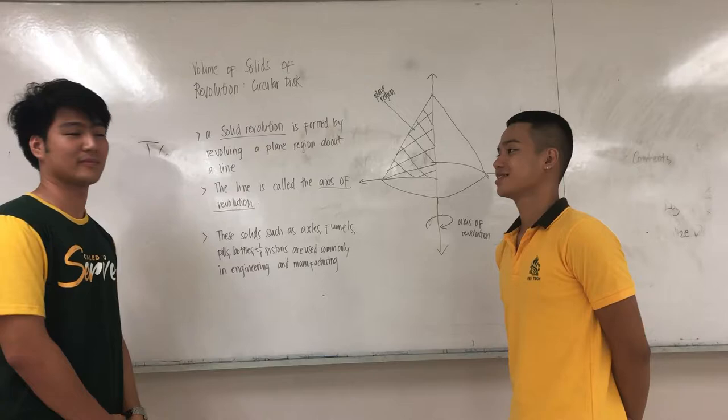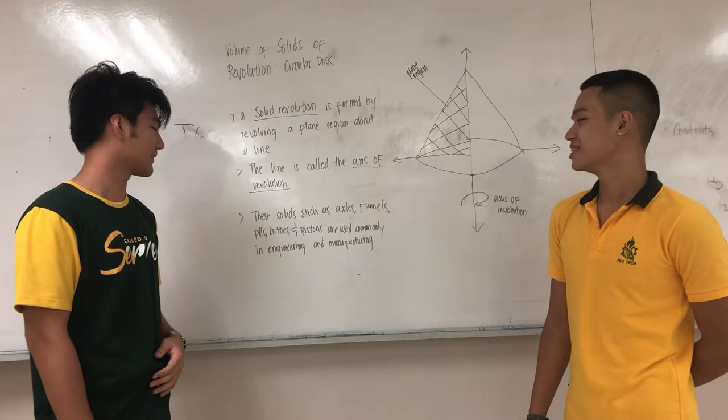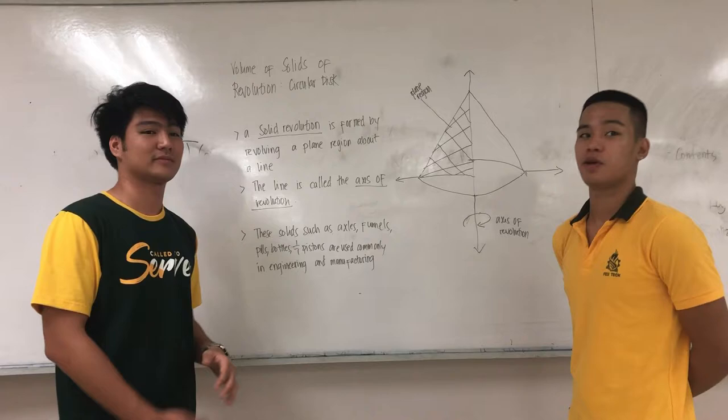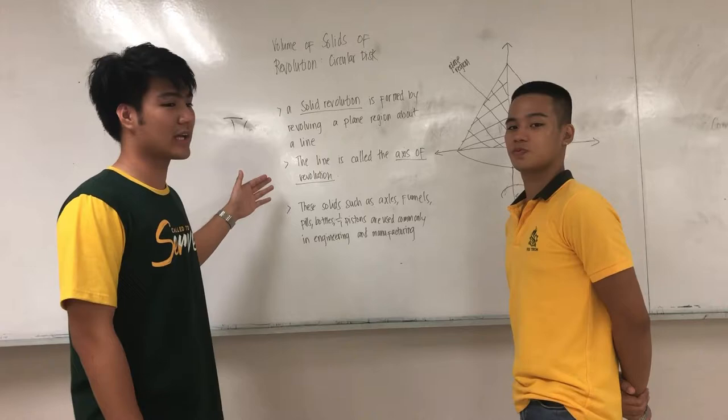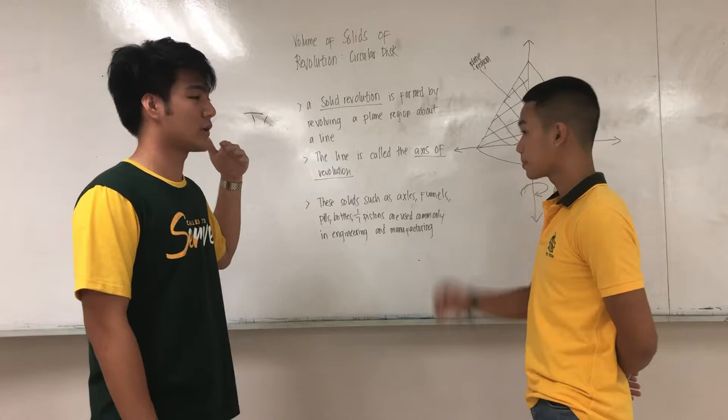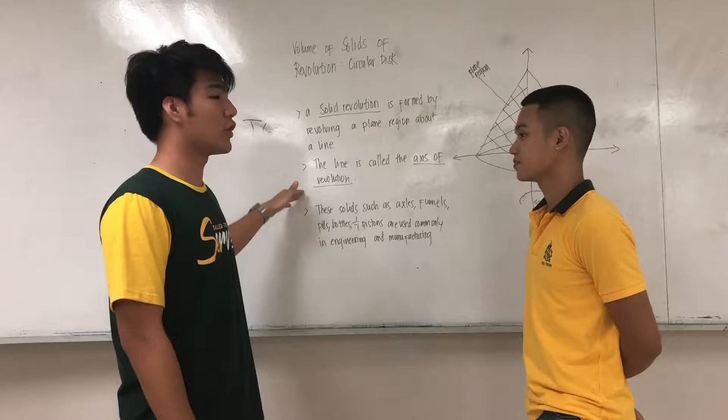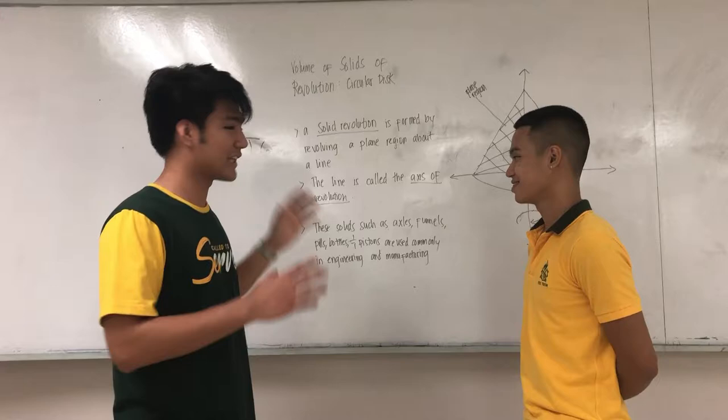These solids — such as axles, panels, pills, bottles, and pistons — are used commonly in engineering and manufacturing. In our previous lesson, we used definite integrals to get the area under a curve. But this time, we are going to use the formula of an area to get the volume under a curve or the intersection of two curves.